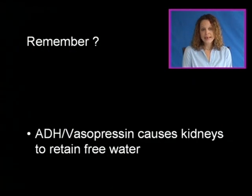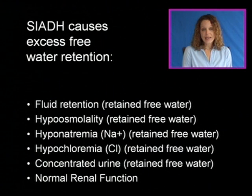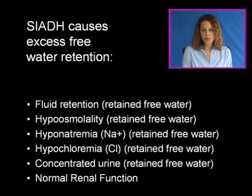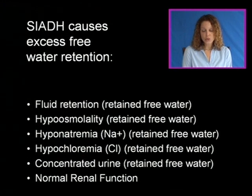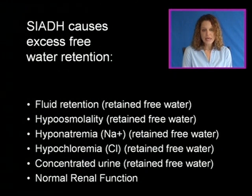ADH, or vasopressin, causes the kidneys to retain free water, and SIADH causes excess free water retention. So there's fluid retention, hypoosmolality, hyponatremia, and hypochloremia — all due to retained free water — along with concentrated urine. And all of this occurs in the presence of normal renal function.